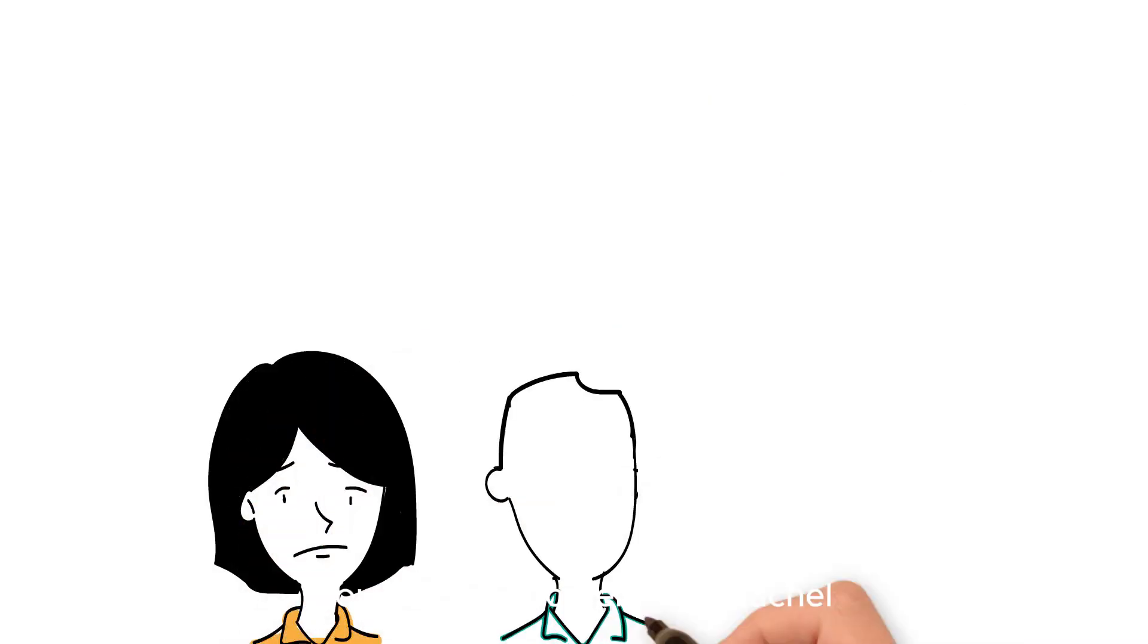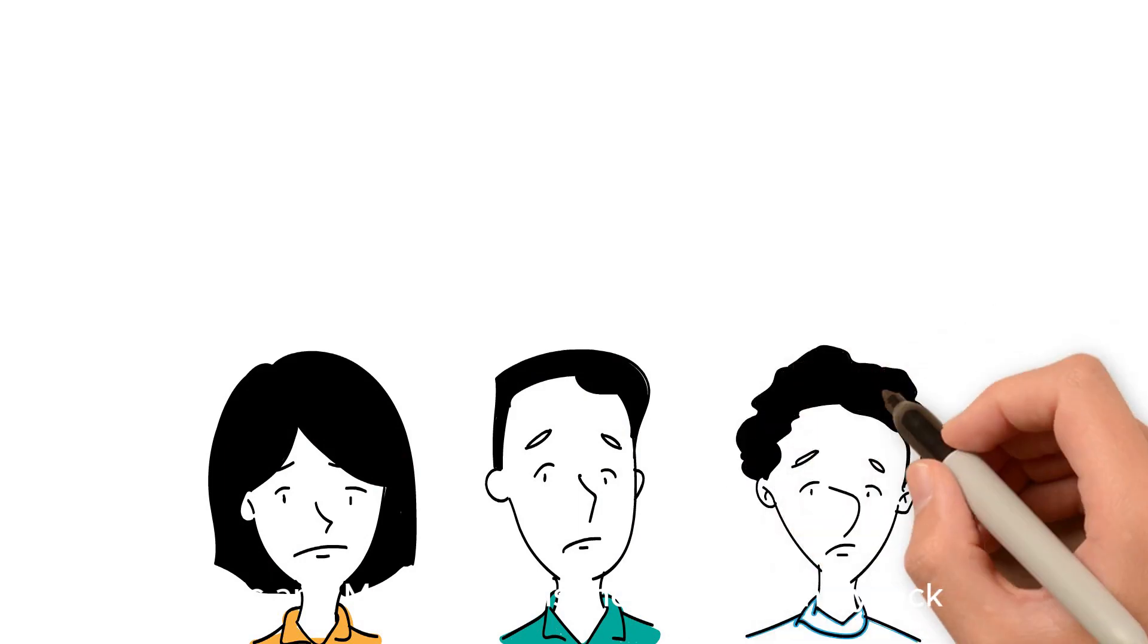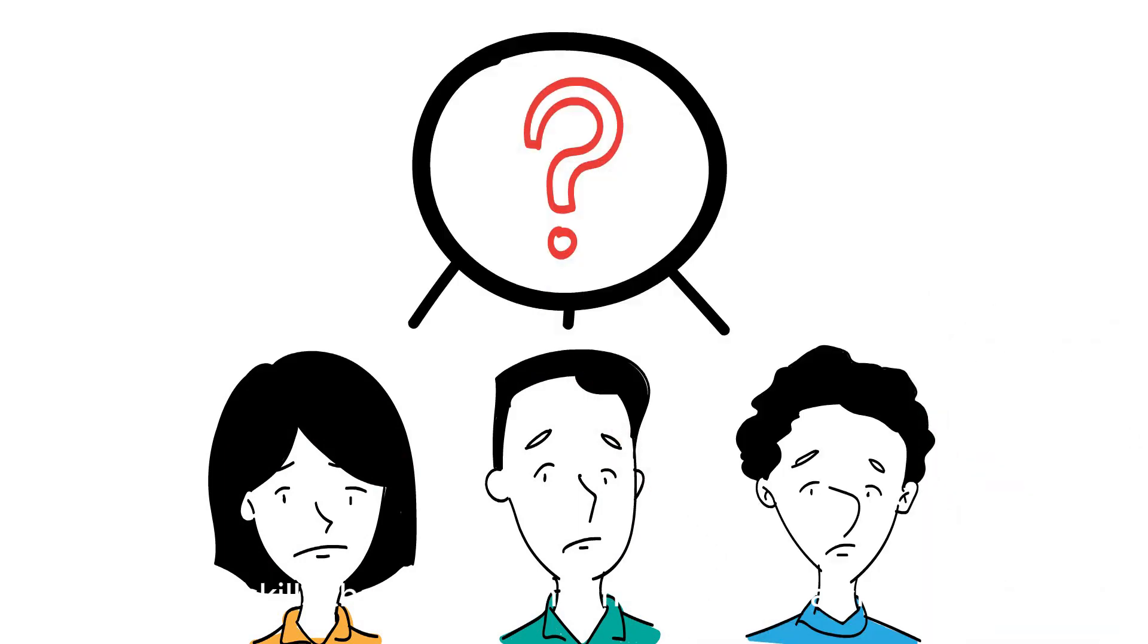You see, the problem that Rachel, Eric, and Marcus face is they all unwillingly lack the skills that are holding them back as a creative.